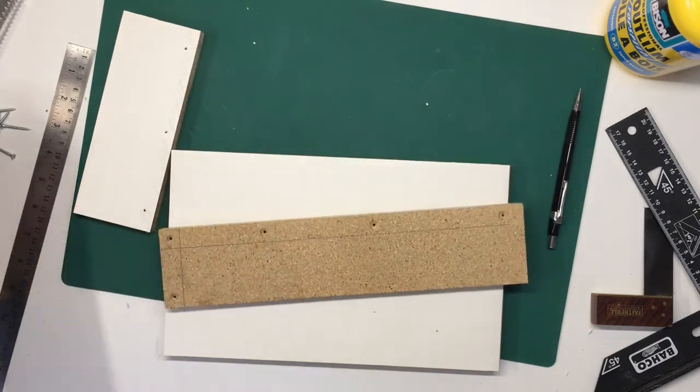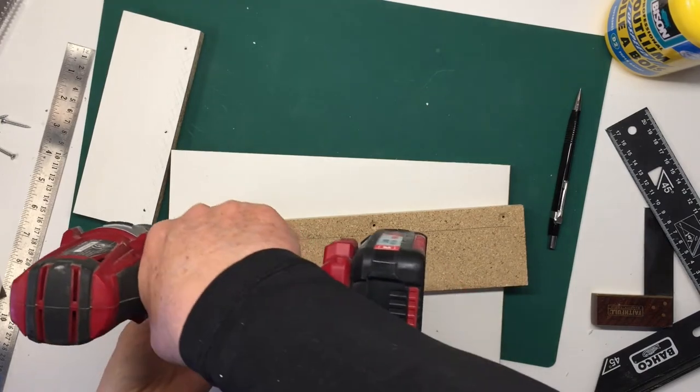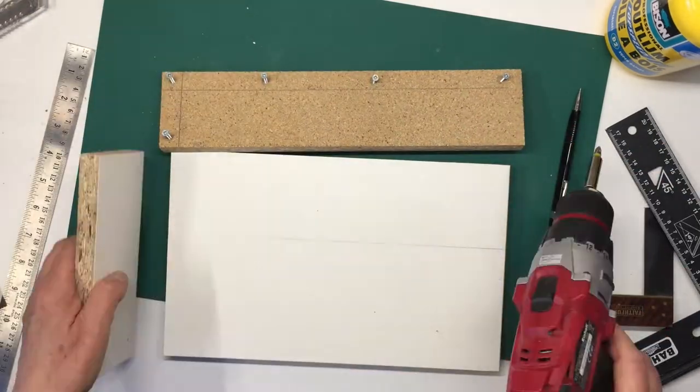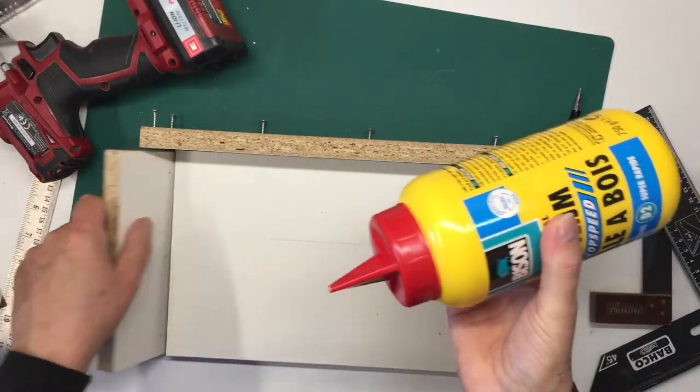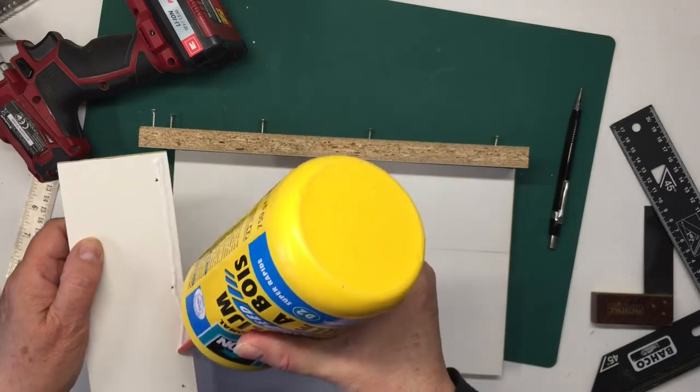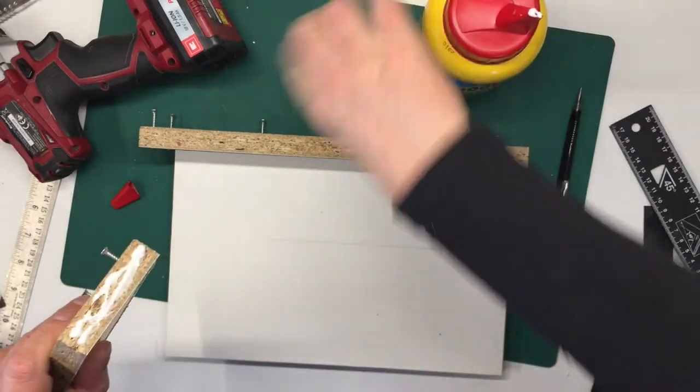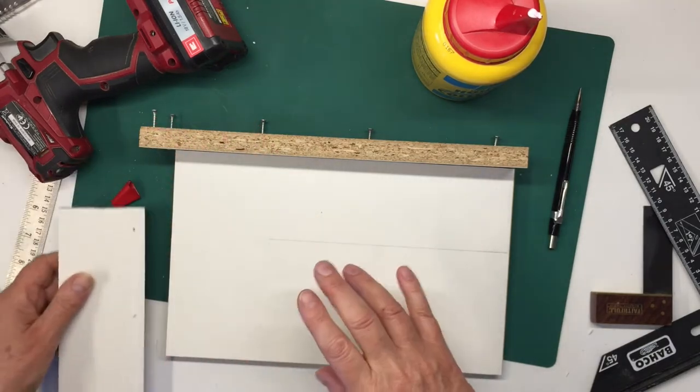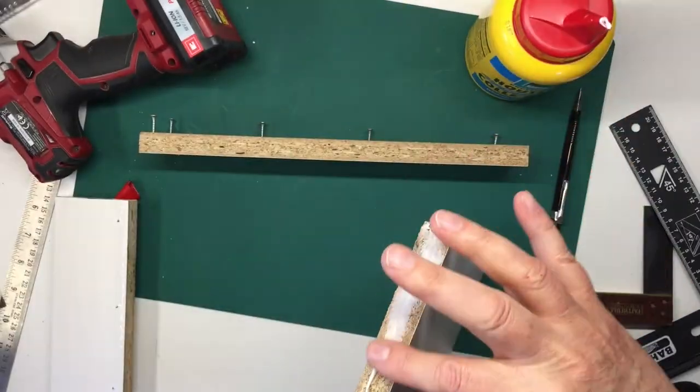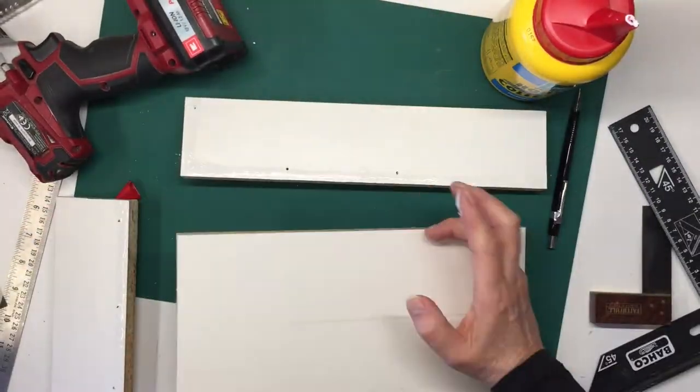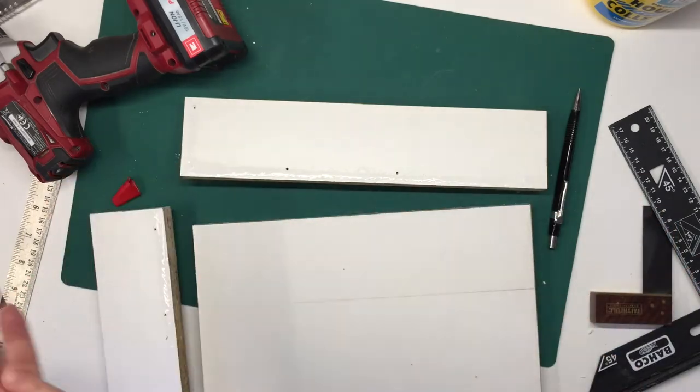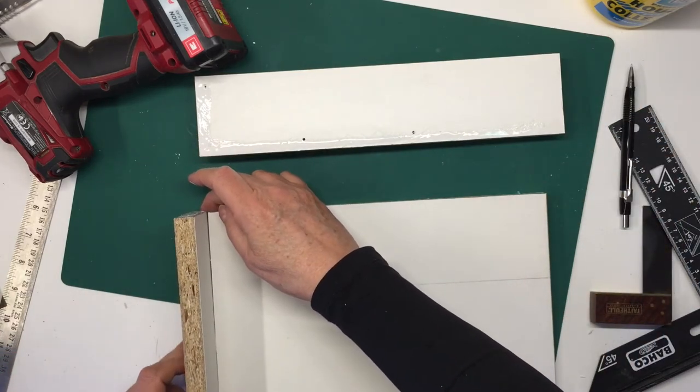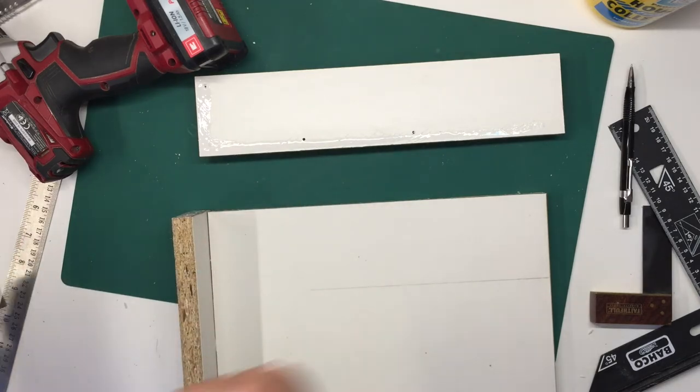Now I will get a few of my screws in, which is always helpful. I'll glue both sides - this side, the laminated side and the chipboard side.